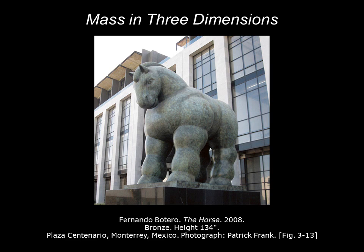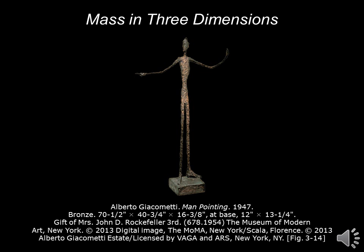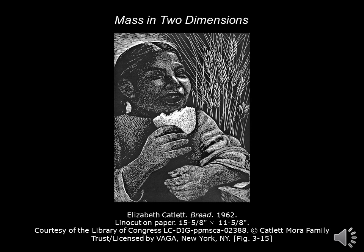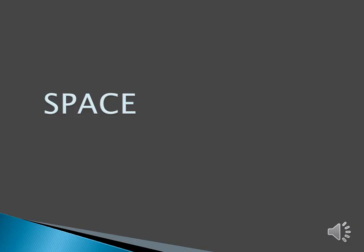Frank Botero's The Horse from 2008 is an example of mass in three dimensions. This is also referred to as a closed form, which means that the sculpture does not overtly interact with the space that surrounds it. This bronze sculpture by Alberto Giacometti has less mass but is more like a linear form, and since the figure has the arms pointing outward and protruding from the surface, this is what we call an open form. This linoleum cut print titled Bread by Elizabeth Catlett is an example of mass in two dimensions — the artist used lines to follow the curvature of the body to give us the sense that the figure has mass.